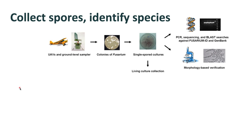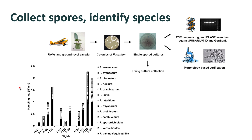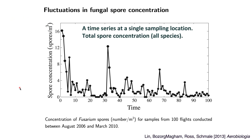We can collect colonies of Fusarium spores — that's a genus — and actually break it down by species to see what the population of Fusarium was as a function of time. We do this over many days and build up a time series at a single sampling location.